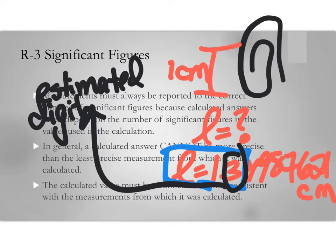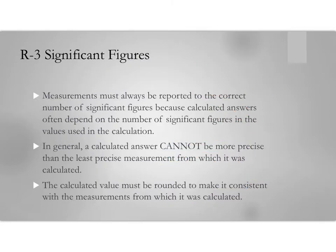Let's go over the rules for significant figures. Measurements must always be reported to the correct number of significant figures because calculated answers often depend on the number of significant figures in the values used in a calculation. In general, a calculated answer cannot be more precise than the least precise measurement from which it was calculated.